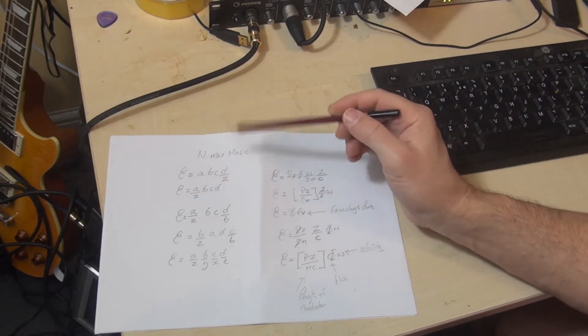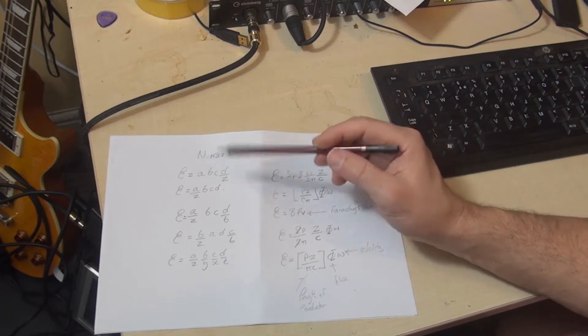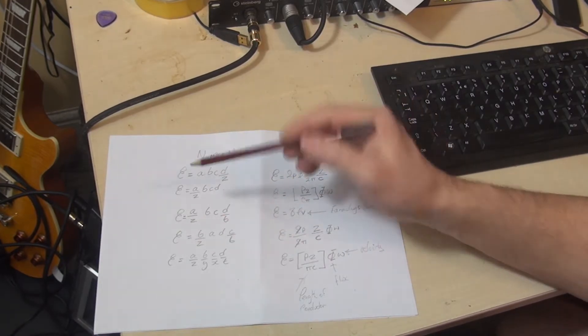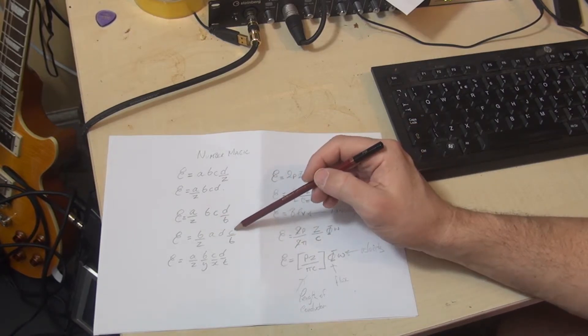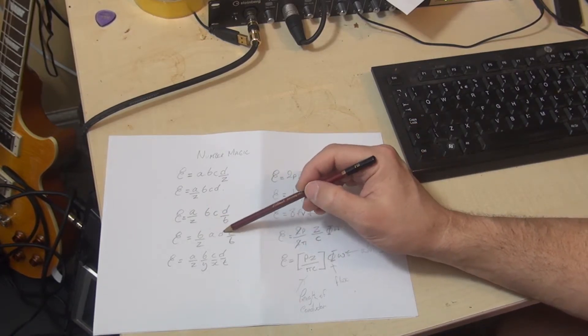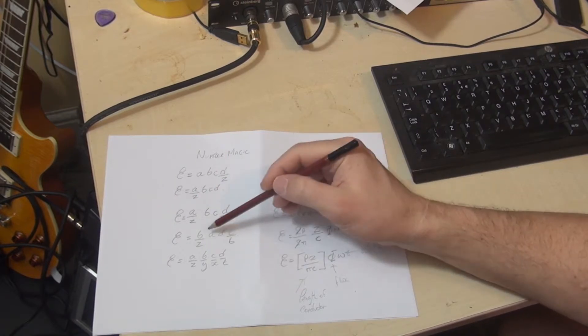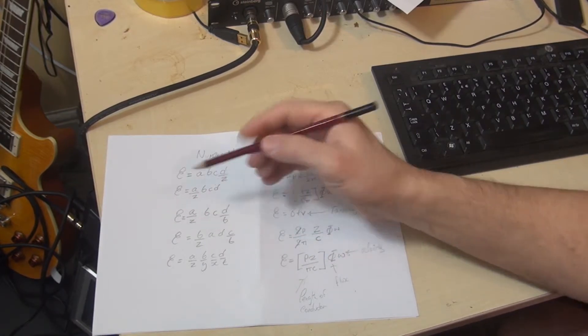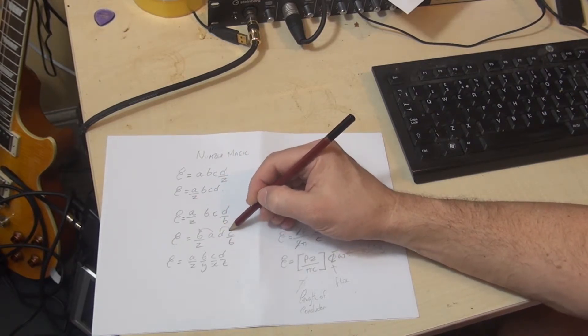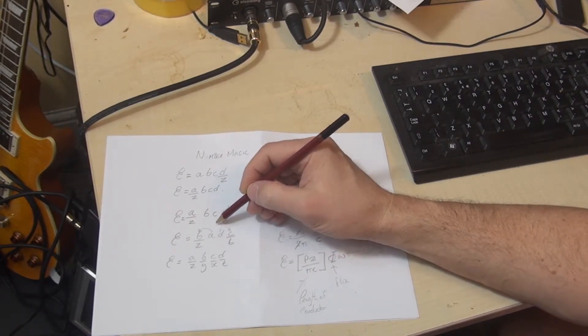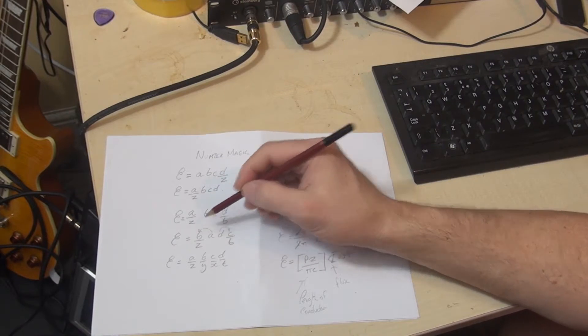The other number magic trick, if that's what you want to call it, is when we have a term like this, where, for example, we have B over Z, and C over B, and A over D in the middle, sorry, A and D in the middle, and we could interchange A with B, or D with C, or A with C, or D with B.